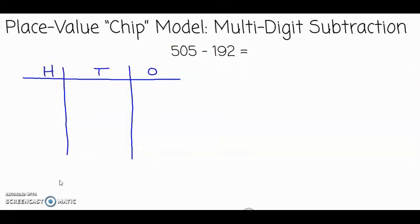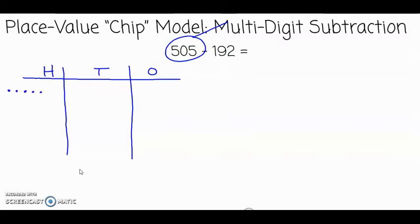Now I look at my subtraction sentence: 505 minus 192. I'm going to put the 505 underneath this magnifying glass to help me remember that that is the number we're subtracting from. That is also the number we're going to represent on our place value chart. So the number 505 has five hundreds, there are no tens in that number, and there are five ones.